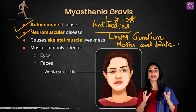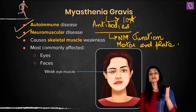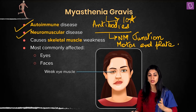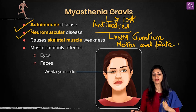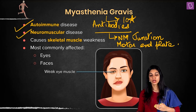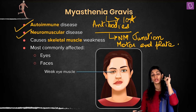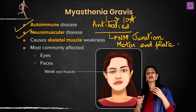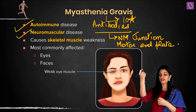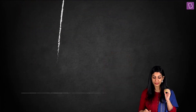In myasthenia gravis, antibodies produced by our own body attack those receptors at the neuromuscular junction. The key point to remember is that the neuromuscular junction is attacked by the immune system, and hence the patient undergoes paralysis of skeletal muscles. They cannot lift their hand; the face muscles are usually affected — face and eyes will be affected — and they will droop down. There will be paralysis because there is no contraction.